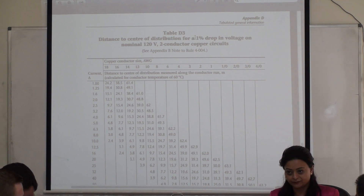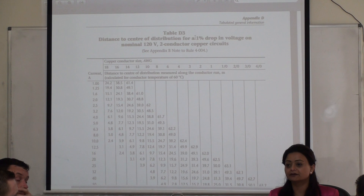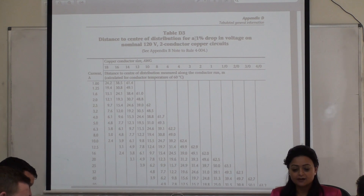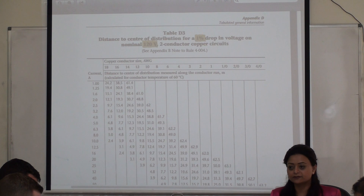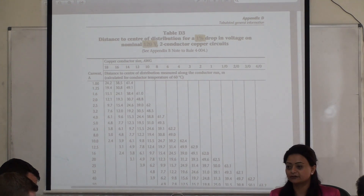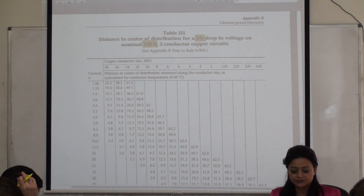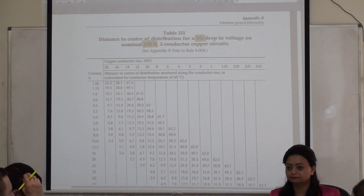I just threw some information at you. For that kind of question, you're going to come here to find your answers. This table is designed for 1% drop and 120 volts only. If I'm given 240 volts, 480 volts, or 600 volts, we're going to make more calculations than just reading the chart. If I'm given 2%, 3%, 4%, or up to 5% drop, I have to make more calculations than finding the answers just from here.